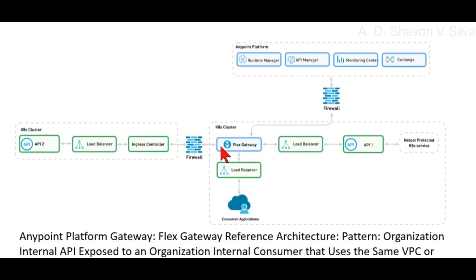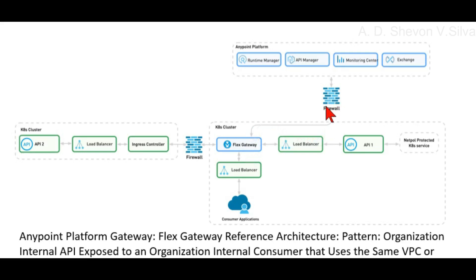Flex Gateway interacts with the firewall, the firewall interacts with the ingress controller, which interacts with the load balancer, and the load balancer serves API two. Additionally, Flex Gateway interacts with the firewall, and the firewall interacts with the Anypoint Platform runtime manager. API Manager, Monitoring Center, and Exchange are all part of the Anypoint Platform.